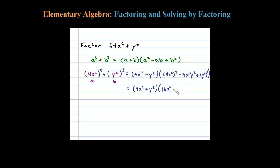Minus 4x squared y squared plus y squared squared is y to the fourth. That's the complete factorization of 64x to the sixth plus y to the sixth, sum of cubes.